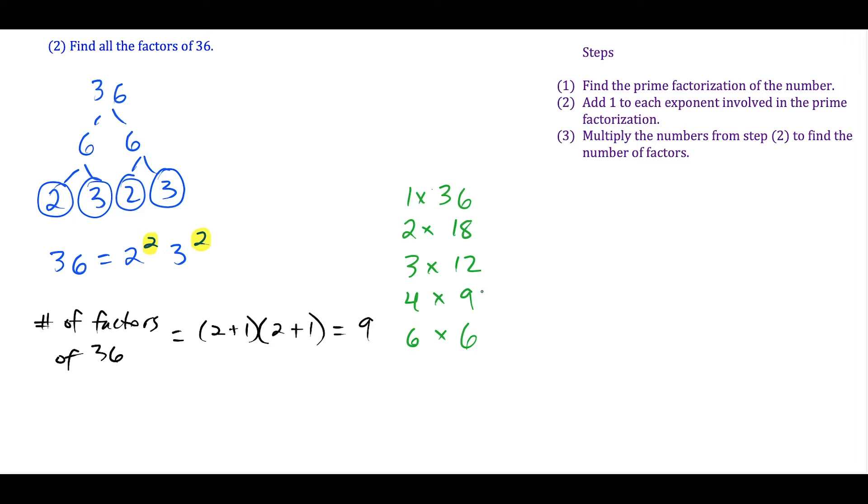When we list our answer, we're not going to list 6 as a factor twice, only once. That's why we have only 9 factors here. Just because 6 shows up as 6 times 6, we're only going to list it once in our final answer. Here's our list of factors of 36.